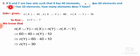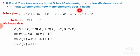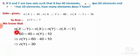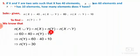Question 5 from exercise 1.6: if X and Y are two sets such that X has 40 elements, X union Y has 60 elements, and X intersection Y has 10 elements, how many elements does Y have? Given N of X equals 40, N of X union Y equals 60, N of X intersection Y equals 10, find N of Y. Using N of X union Y equals N of X plus N of Y minus N of X intersection Y: 60 equals 40 plus N of Y minus 10.